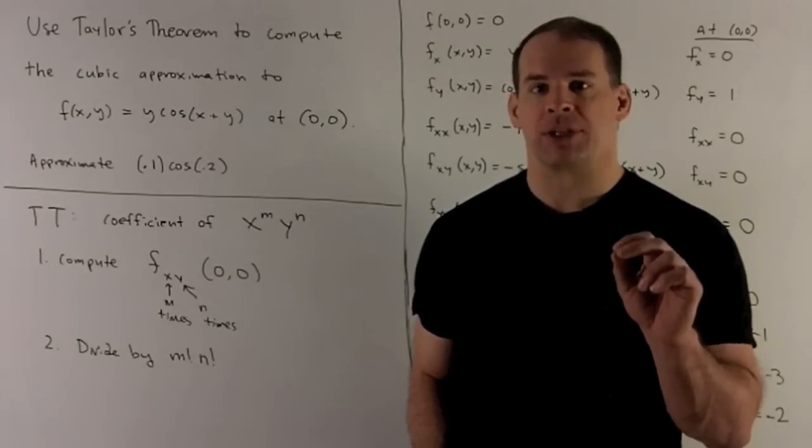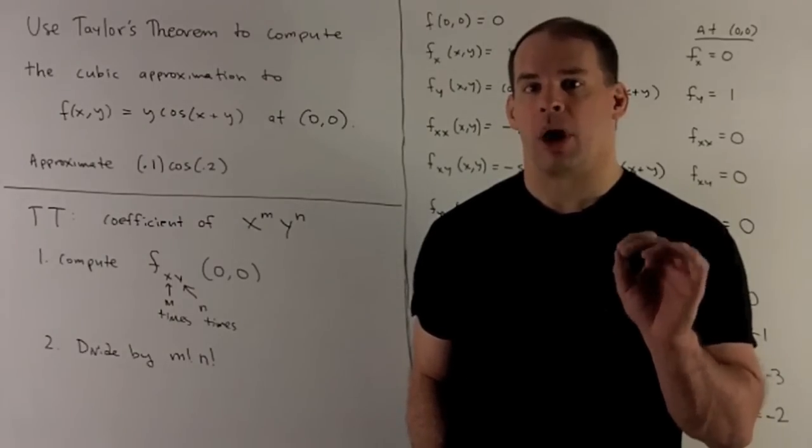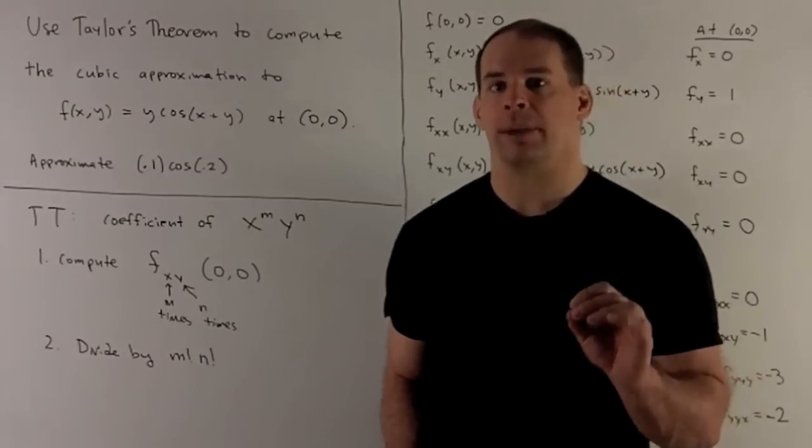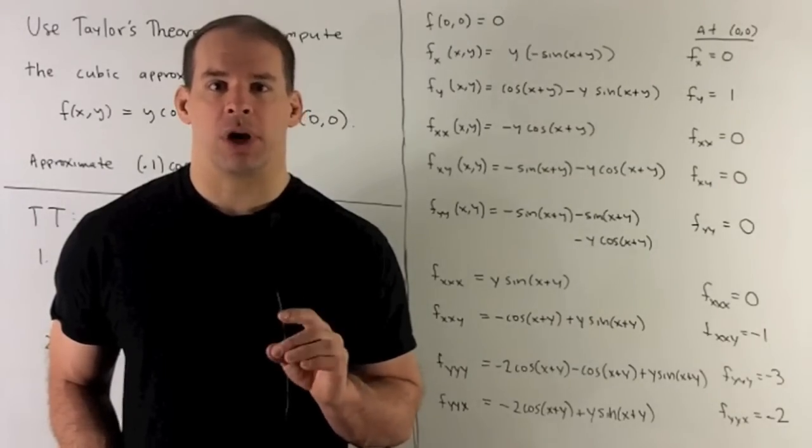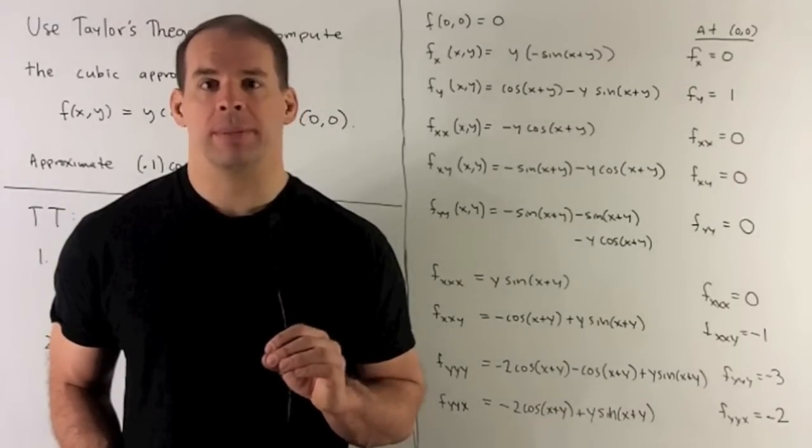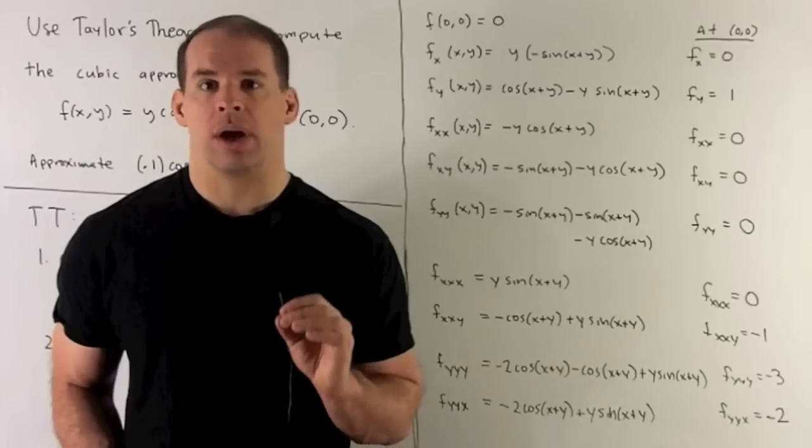So our first step is going to be compute all the partial derivatives up to order 3. Let's work through our partials. First, put our point into our function. Since there's a y in front, 0 comes out.